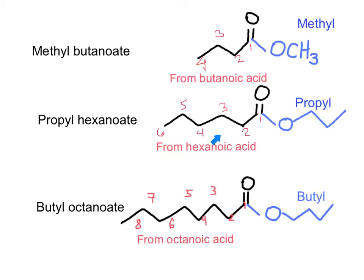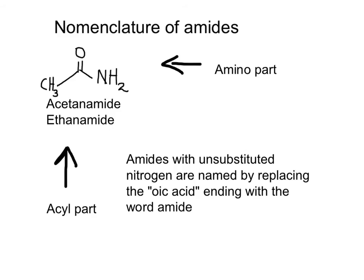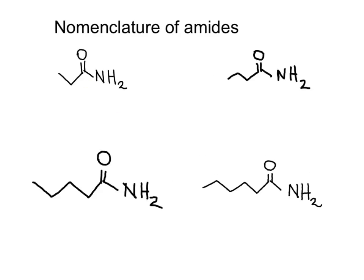This ester is coming from hexanoic acid, and the other is coming from octanoic acid. In the nomenclature of amides, the carbonyl will also be carbon number 1. Primary amides are named by dropping the E from the alkane and replacing it with the word 'amide'. For example, a two-carbon chain is ethanamide by IUPAC, but its common name, acetamide, is used a lot more than ethanamide. All of these are primary amides with increasing numbers of carbons.